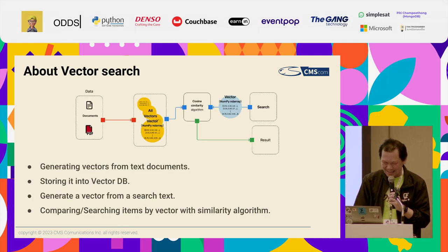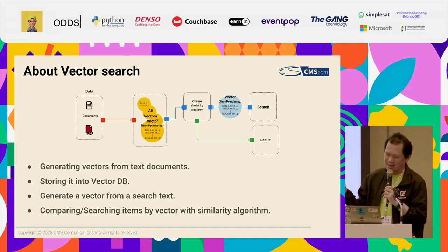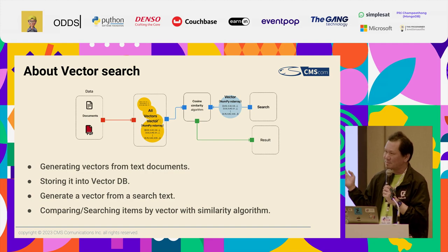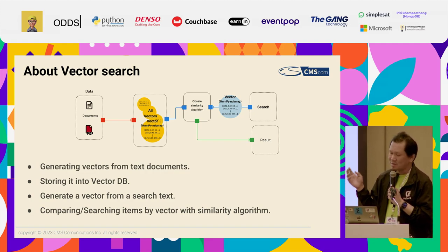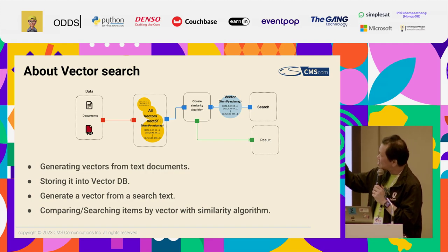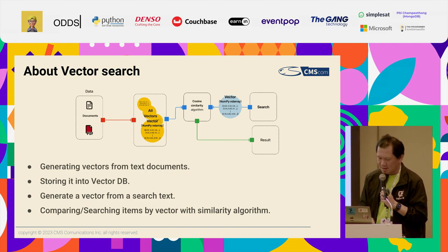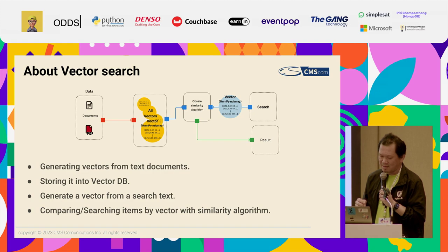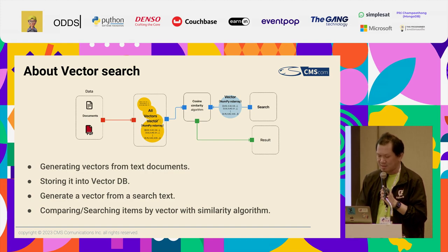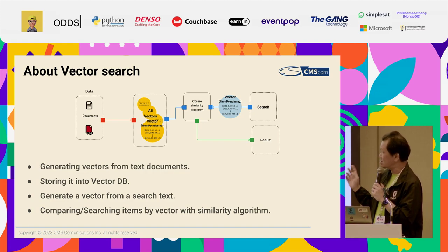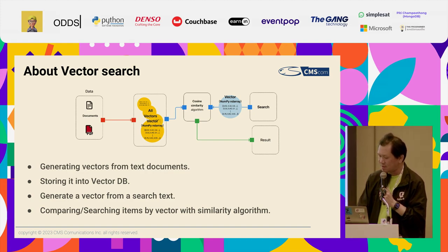About vector search: basically, you generate a vector from the text document and store it into the vector database. Then for search, you generate a vector from the search text or search term, and find similar items by comparing vectors using a similarity algorithm. This is the basic vector search.